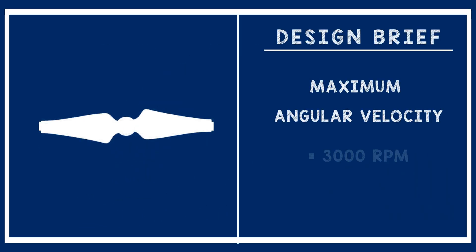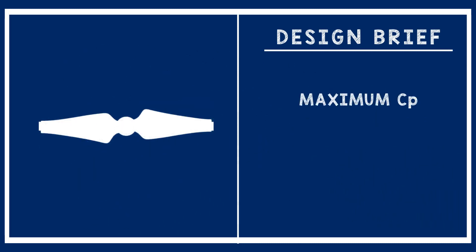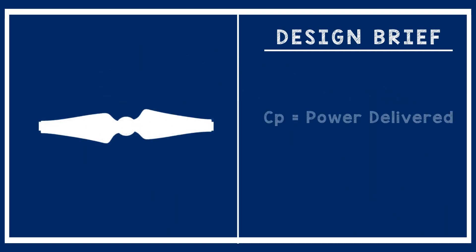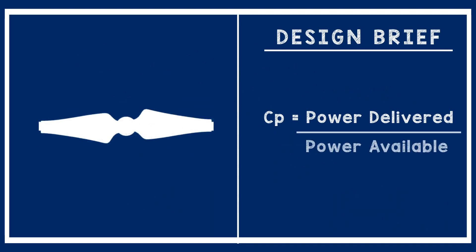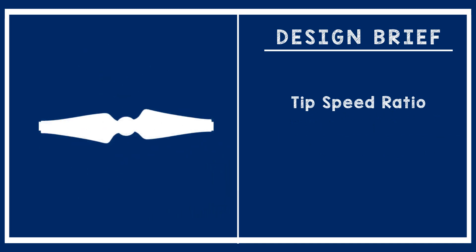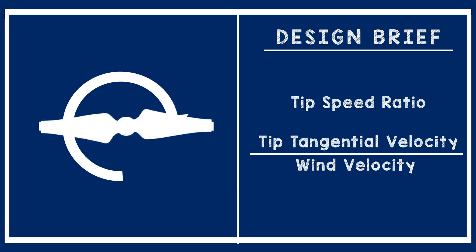The maximum angular velocity should not exceed 3,000 rpm. The maximum coefficient of power, Cp, should be obtained at a tip speed ratio between 3 and 8. Cp is the maximum amount of power delivered to the turbine compared to the total power available. The tip speed ratio is defined as the ratio between the tangential speed of the tip of the blade and the actual speed of the wind — essentially how much faster the blade is rotating compared to the wind.